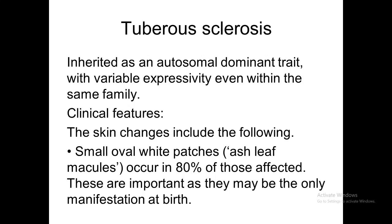The second disease in this group is tuberous sclerosis. It is inherited as autosomal dominant with variable expressivity even within the same family — so all family members will have it, but with variable severity. Some have mild signs and symptoms, while others have more severe involvement, with more systems affected, poor prognosis, and less life expectancy.